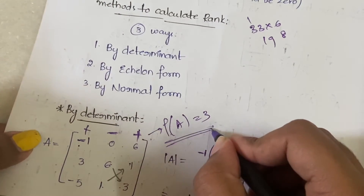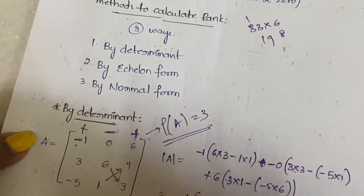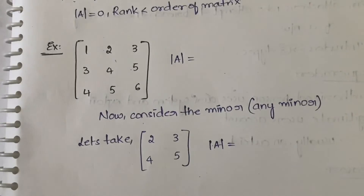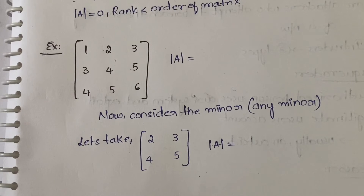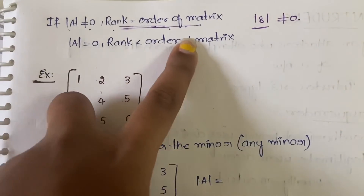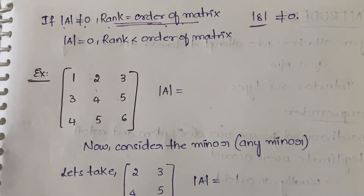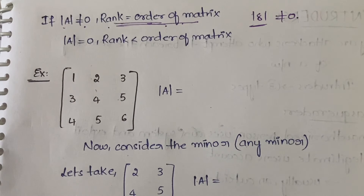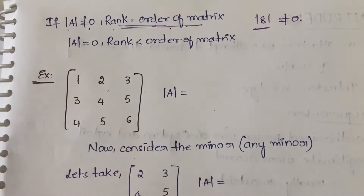Since 181 ≠ 0, you can directly write the rank as 3. But in case you are getting the determinant as 0, then what do you do? If the determinant equals 0, the rank will be less than the order of the matrix. For example, if you have a 3×3 matrix and you got determinant 0, the rank will be less than 3 — it can be 2 or it can be 1.